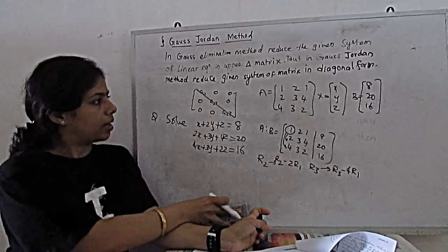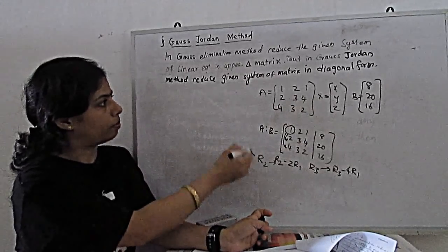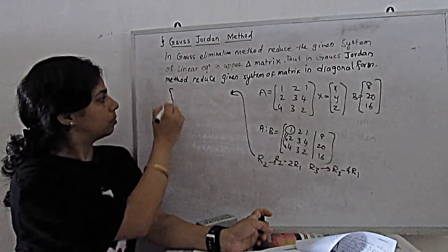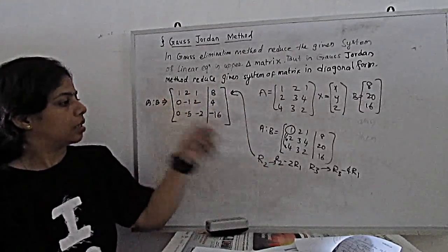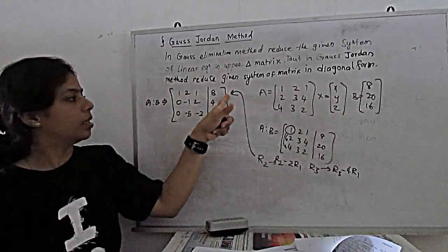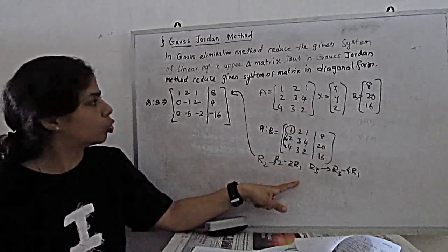So our second matrix will come after this operation. Our new matrix will become this. See, first row as it is, second row we will calculate with the help of R2 minus 2R1.